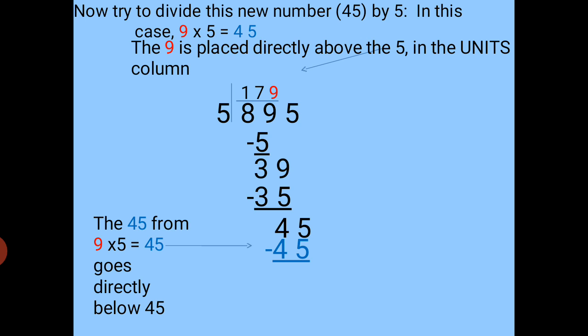The 9 is placed directly above the 5 in the units column. The 45 from 9 × 5 = 45 goes directly below 45. Now when you subtract 45 from 45 you get 0. So at this point our division is complete.